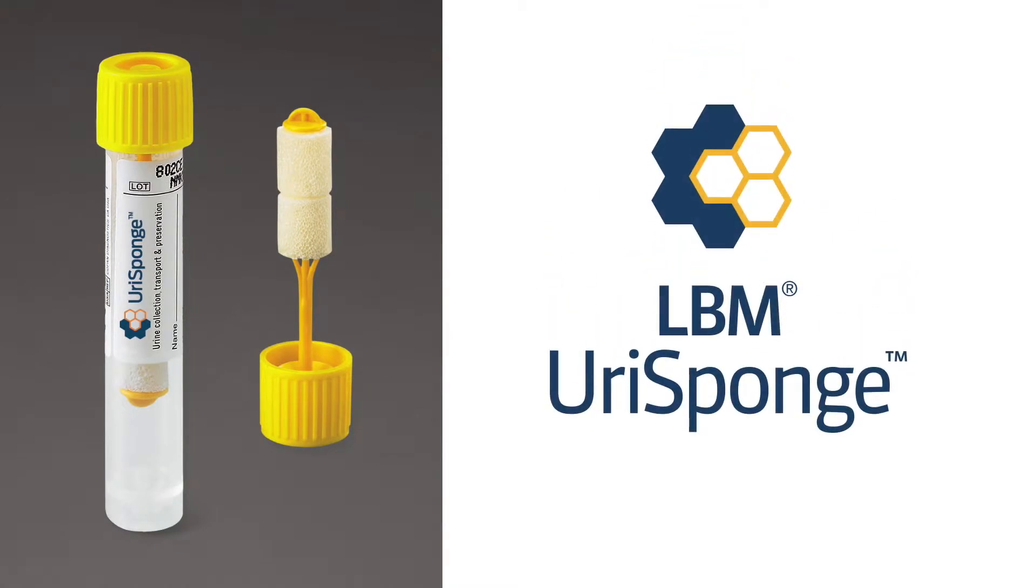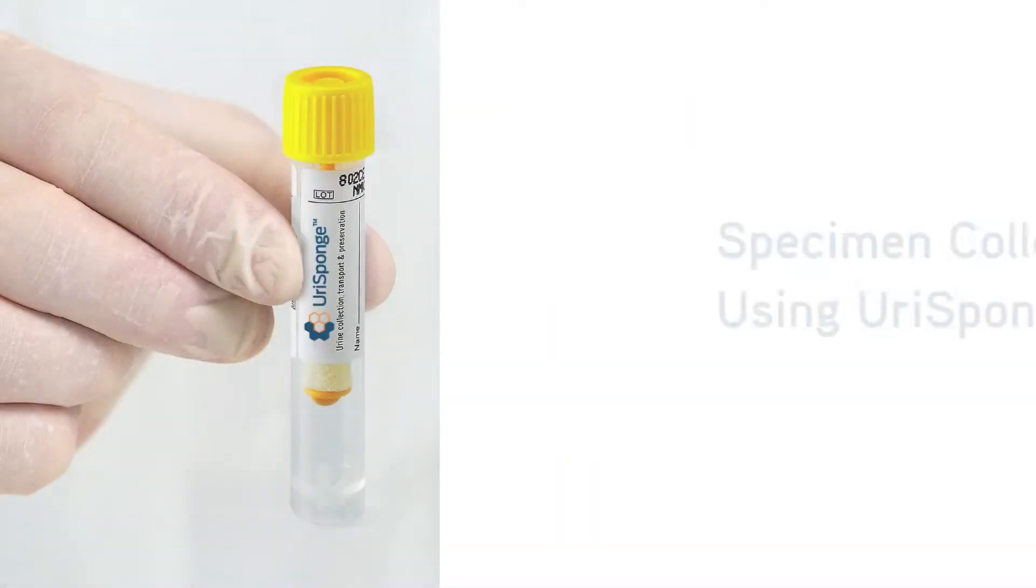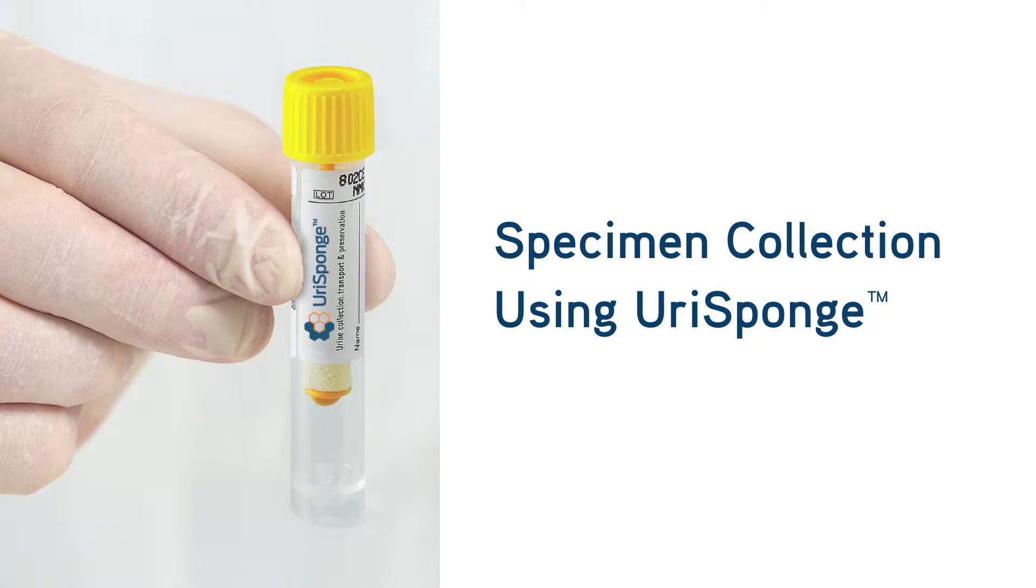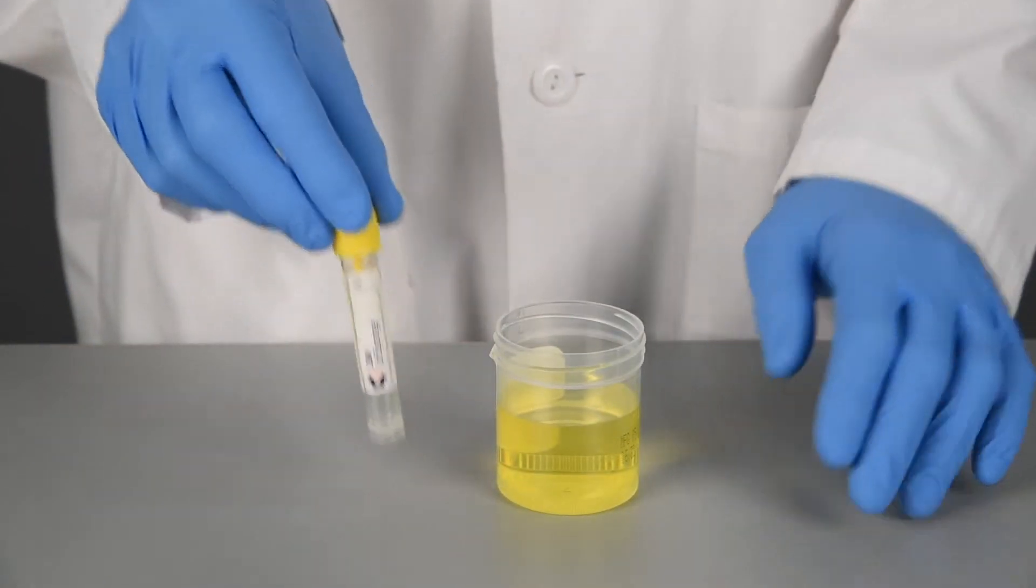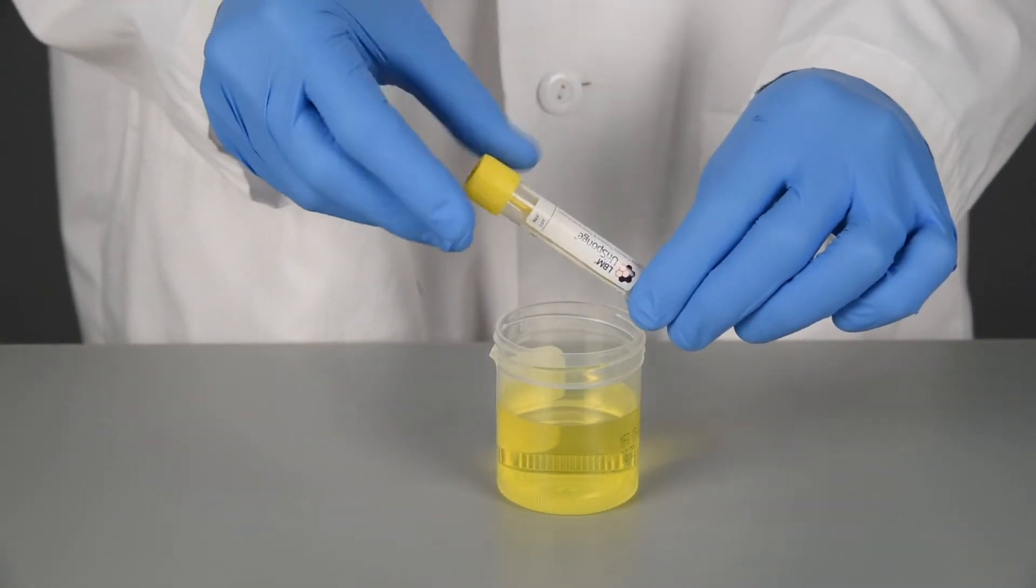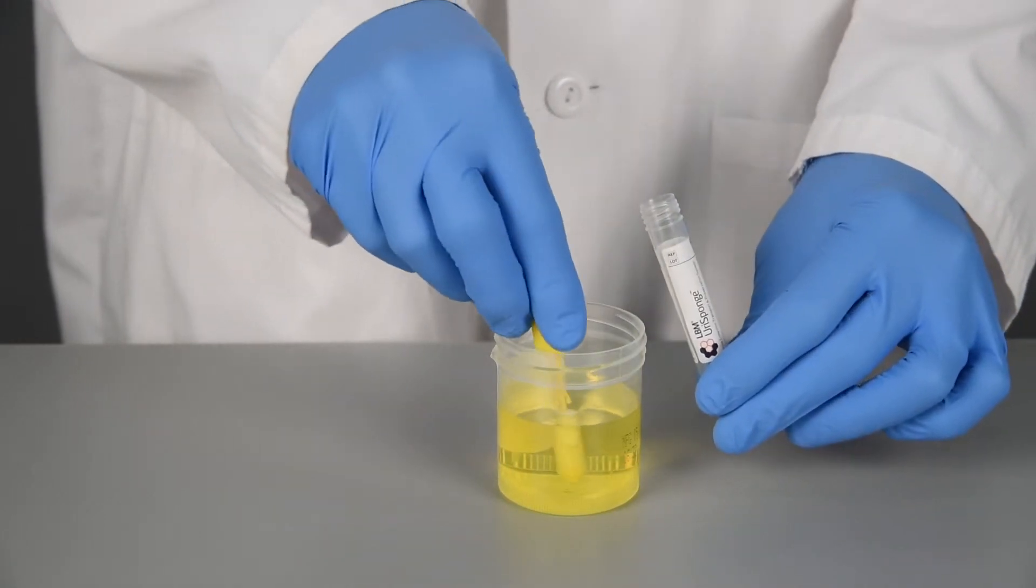Copan Uri sponge instructional video: specimen collection using Uri sponge. Obtain a clean catch urine sample from the midstream portion into a sterile container. Open the Uri sponge tube and, holding by the cap, dip the sponge applicator into the urine sample.